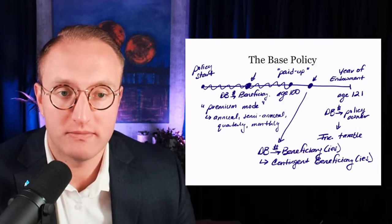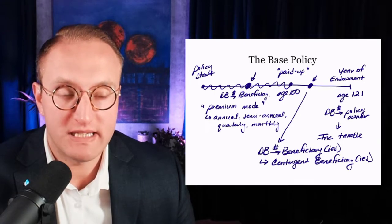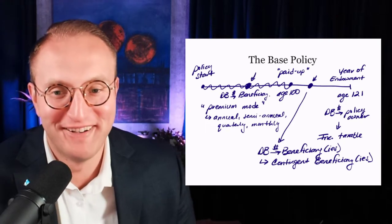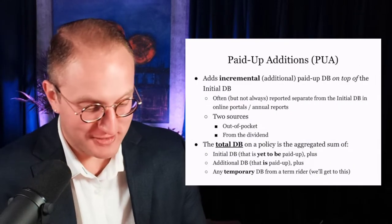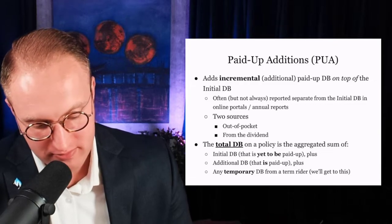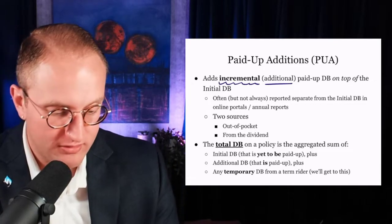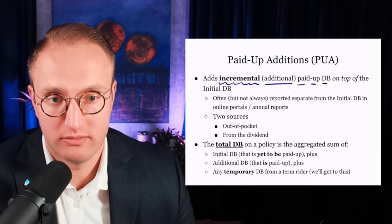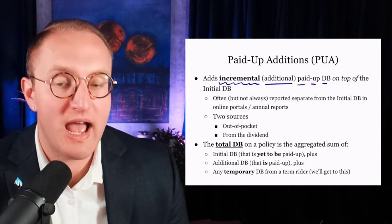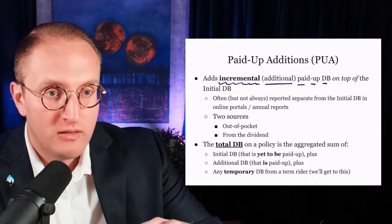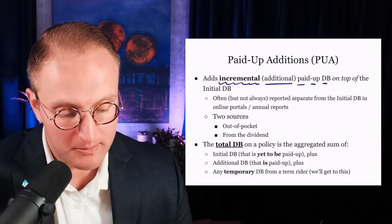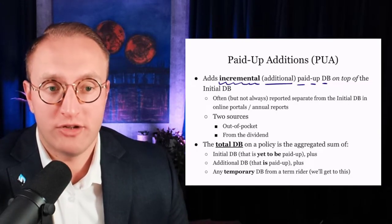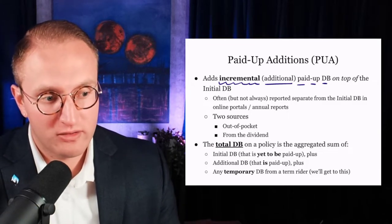That's your base policy — the base premium and the initial death benefit in a very basic drawing. Now, paid-up additions: PUA premium buys incremental additional paid-up death benefit that we then add to the initial death benefit. On the online portal that almost all companies now offer, you can log in, check the various values — your death benefit, cash values, loan value, and outstanding policy loan balances.